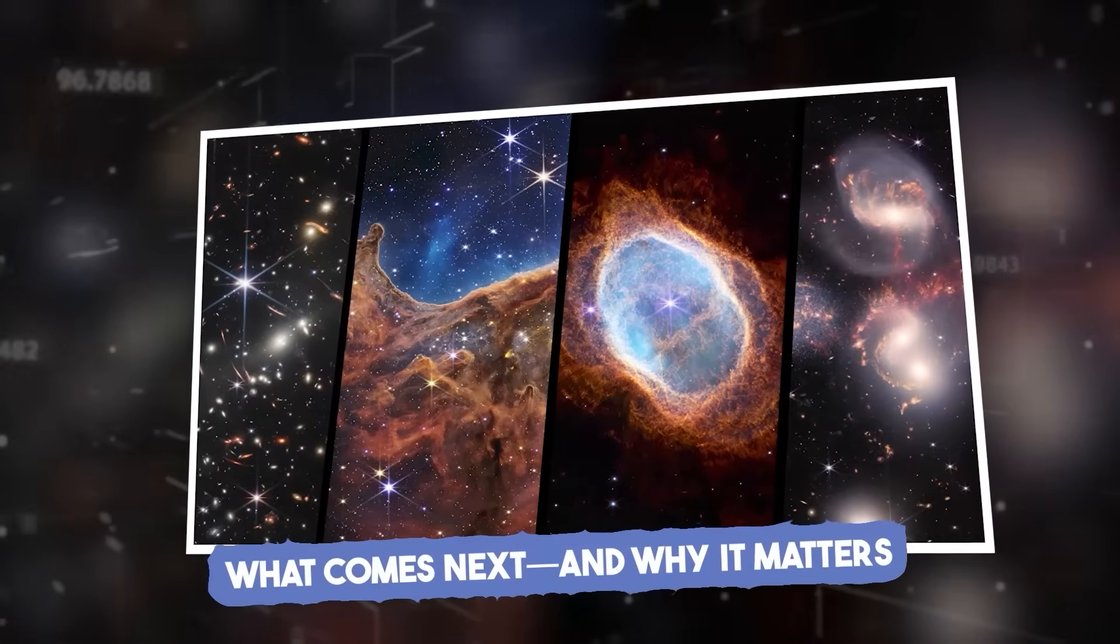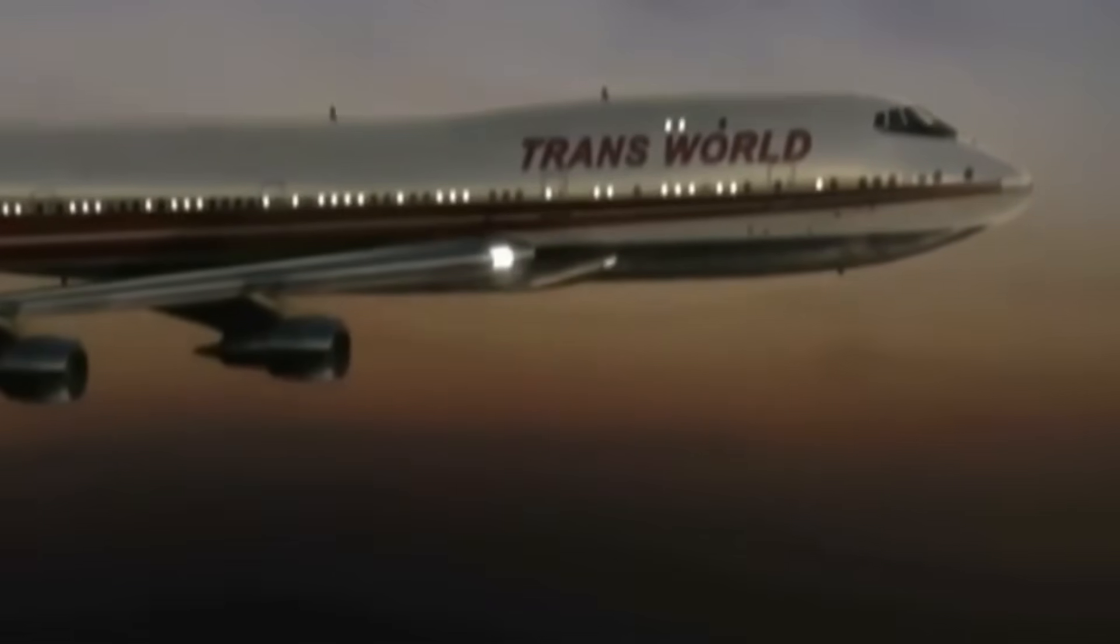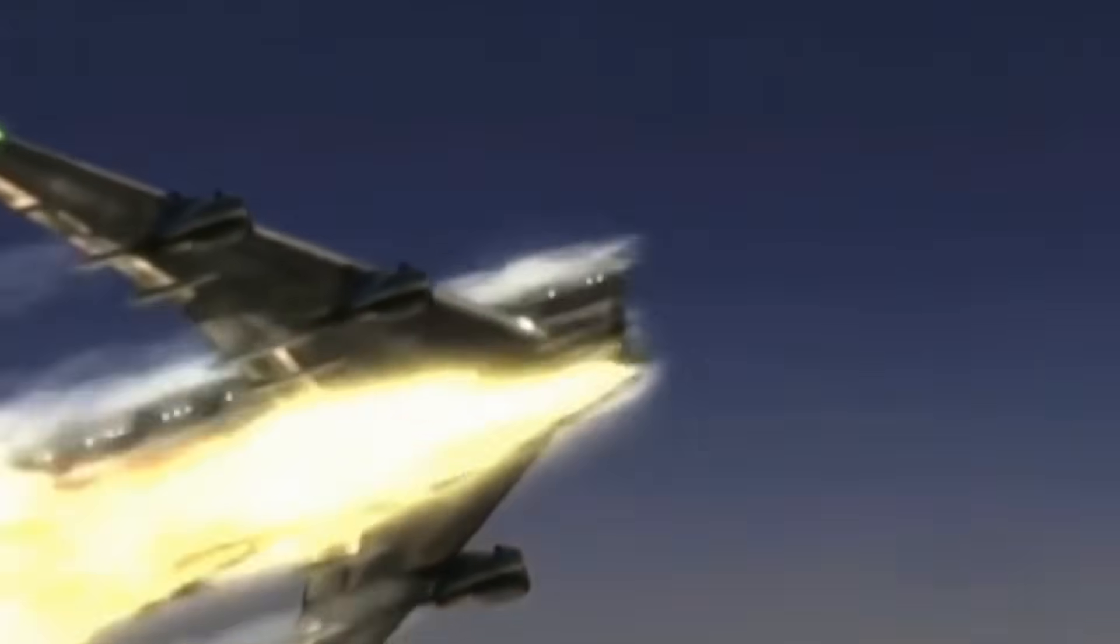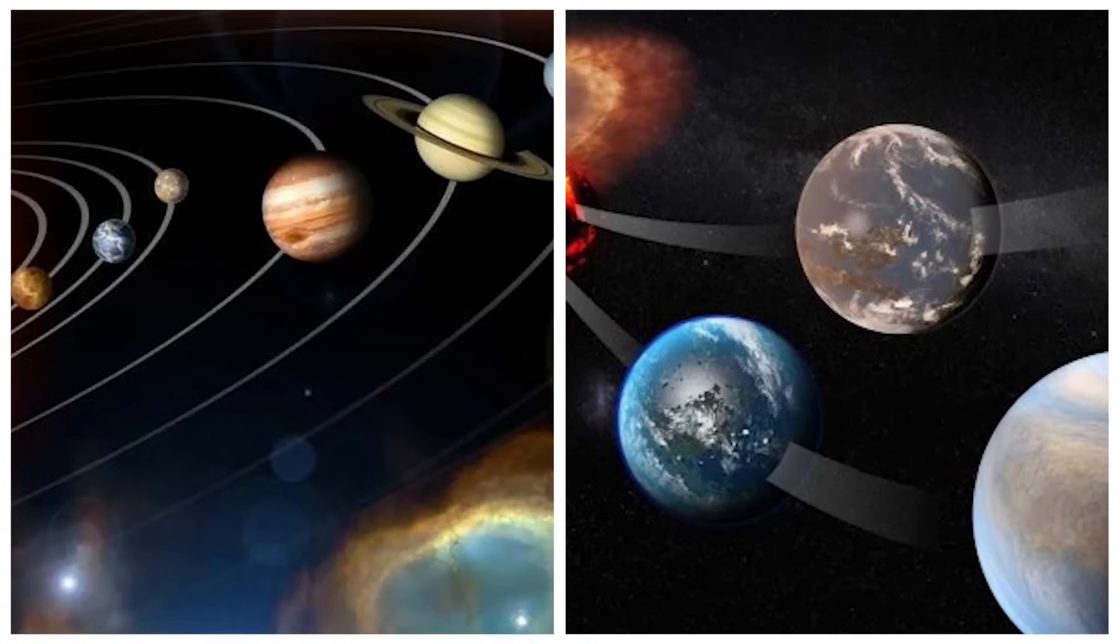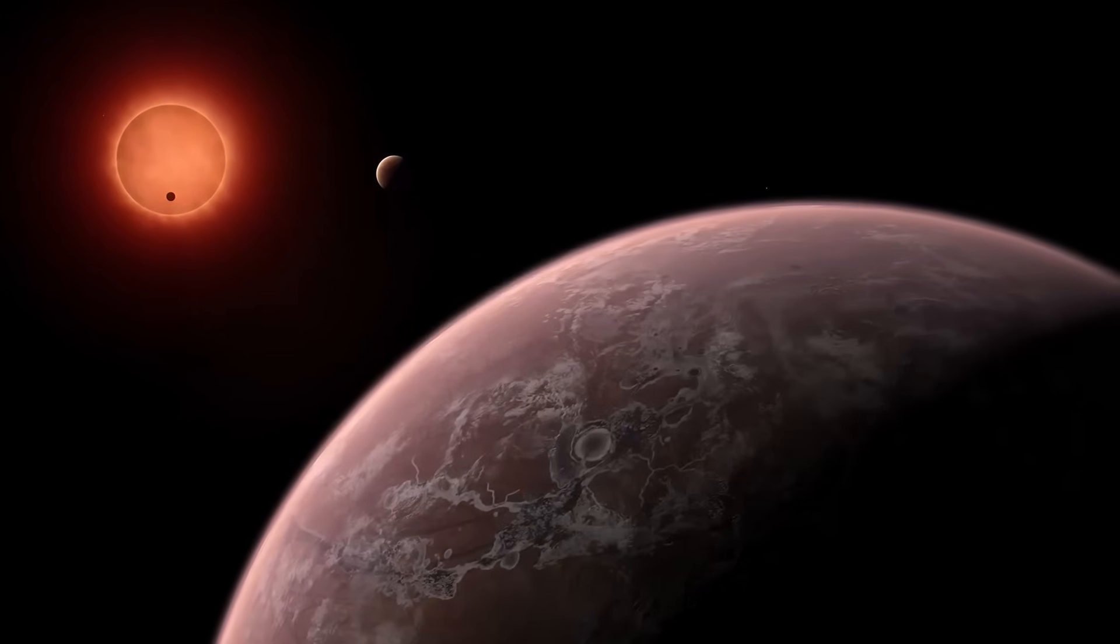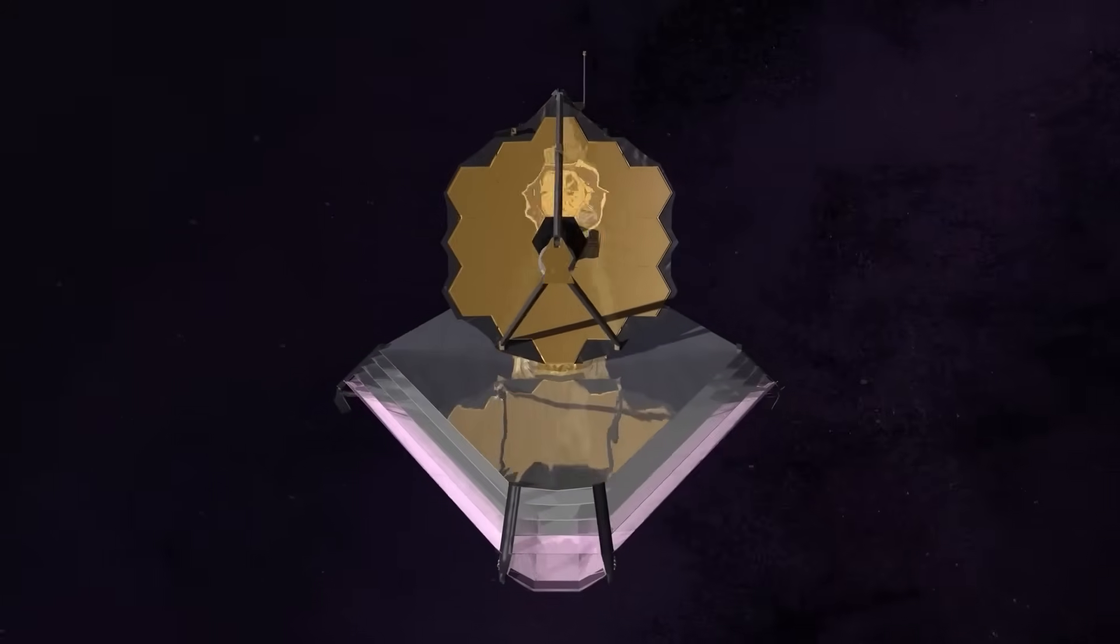What comes next, and why it matters. This isn't the end of the story. It's just the beginning. The James Webb Space Telescope will keep watching TWA-7b in the months and years ahead. By capturing more images over time, scientists can chart its orbit precisely, figure out how fast it's moving, and see how the disk around it evolves. This helps build a real-time movie of how planetary systems change.